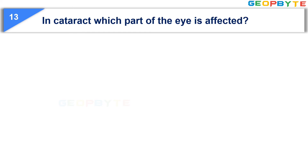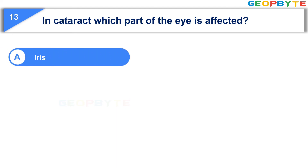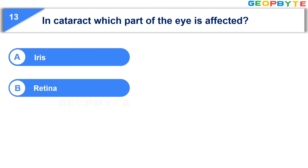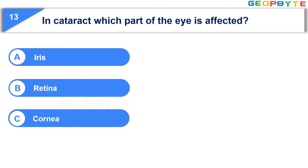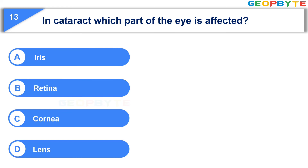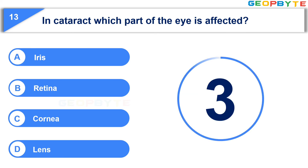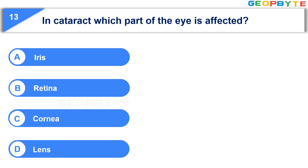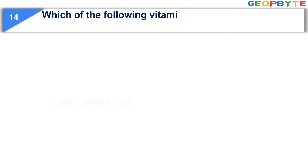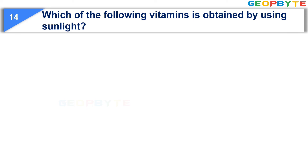The 13th question is: In cataract, which part of the eye is affected? Option A: Iris. Option B: Retina. Option C: Cornea. Option D: Lens. Your time starts now. Your time is up and the correct answer is Option D: Lens.